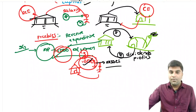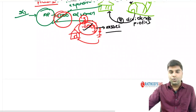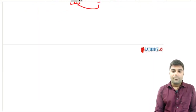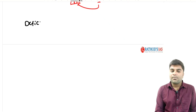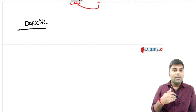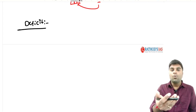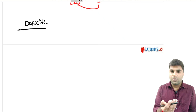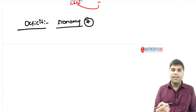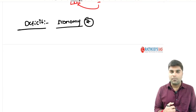In economics, the literal meaning of deficit is: if you want something and you don't have it, you call it a deficit. In the economy, if you want some money but you don't have it, we call it a deficit. In our static classes, we have discussed different kinds of deficit: revenue deficit, fiscal deficit, and so on.